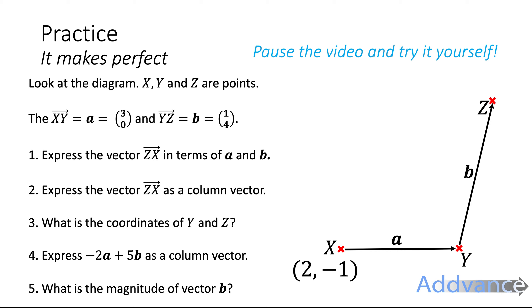Okay so it's asking express the vector Z to X in terms of a and b and notice that going from Z to X is going backwards from X to Z so you will be going backwards and then you're going to express it as a column vector. Again you're going in the opposite direction of a and the opposite direction of b so we will become negative.